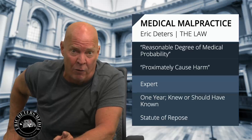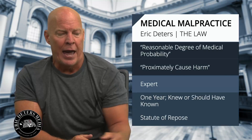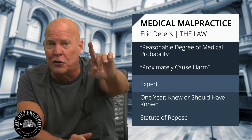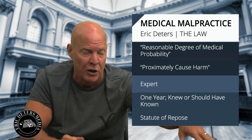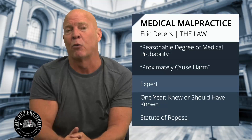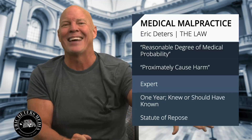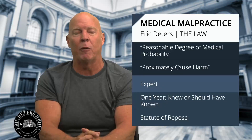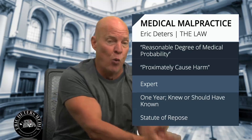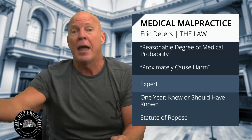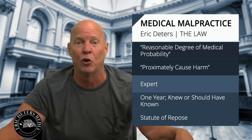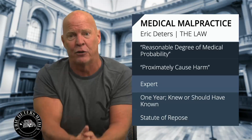In Ohio, your expert has to have practiced in that field and spent at least 50% of their time in that field. They recently changed the rules — it is at the time of the malpractice. So if you're a board-certified orthopedic and the malpractice happened in 2020, and you were practicing at that time, that person could be your expert. If it's 2023 and that doctor no longer has their medical license, they could still be your expert. It's at the time of the malpractice — that's a new rule.